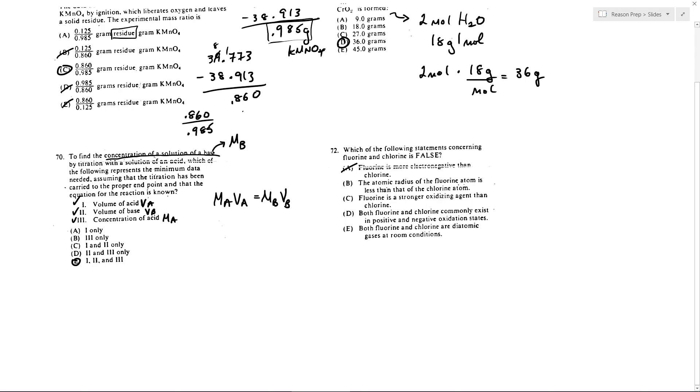The atomic radius of fluorine is less than that of chlorine. Yes. Remember, as you go down a group, your radius increases, your atomic radius. So since fluorine is above chlorine, fluorine is going to have a smaller radius. That is true.